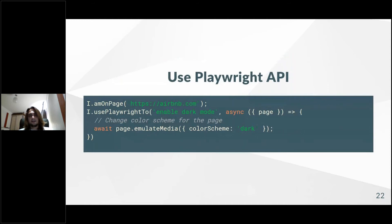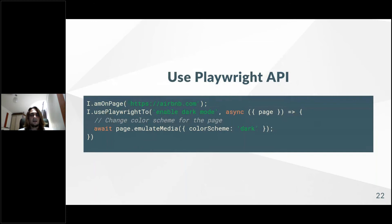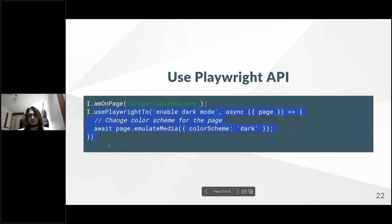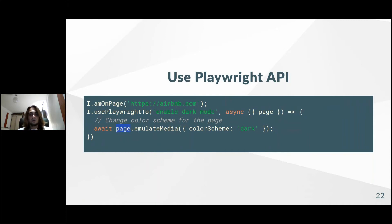Getting back to Playwright — you can combine Playwright API commands with awaits with nice-looking CodeceptJS commands. Most functionality is implemented in CodeceptJS commands like `click`, `fillField`, and so on. But if you need to use some internals of the Playwright API — some tricks like emulating dark mode — you can access the Playwright engine, take the page object, and do that with the Playwright API directly. If there's a limitation in CodeceptJS, go to the Playwright API and implement it on your own.